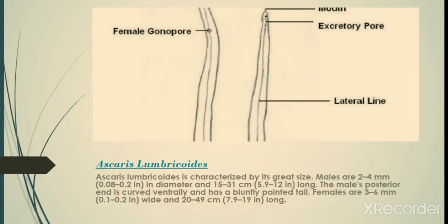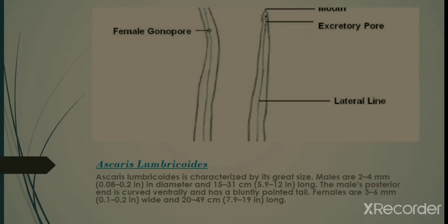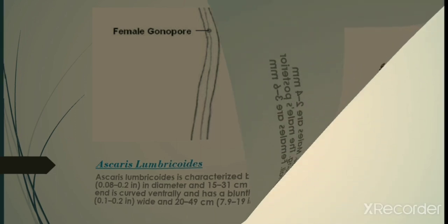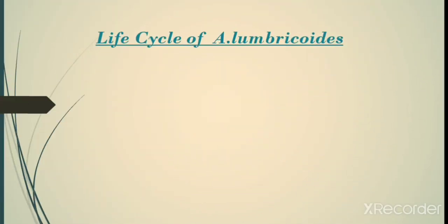Now we talk about Ascaris lumbricoides. Ascaris lumbricoides is characterized by its great size: males are 2 to 4 millimeters in diameter and 15 to 31 centimeters long; the male's posterior end is curved ventrally and has a bluntly pointed tail. Females are 3 to 6 millimeters wide and 20 to 49 centimeters long.